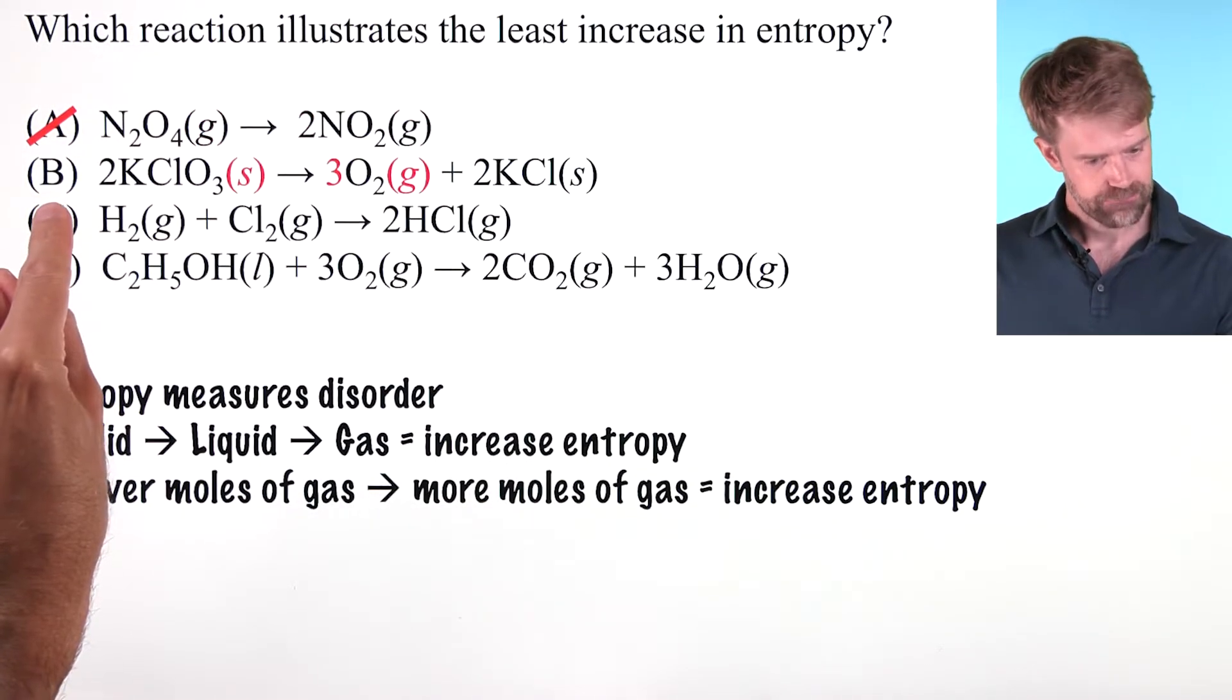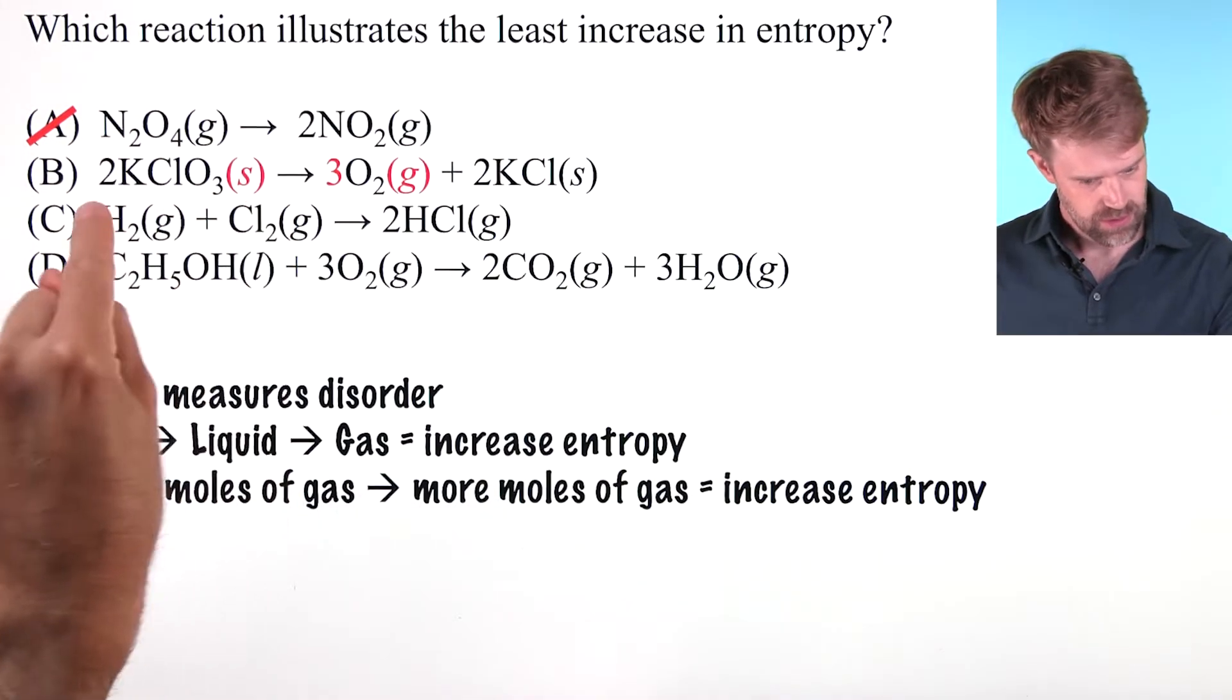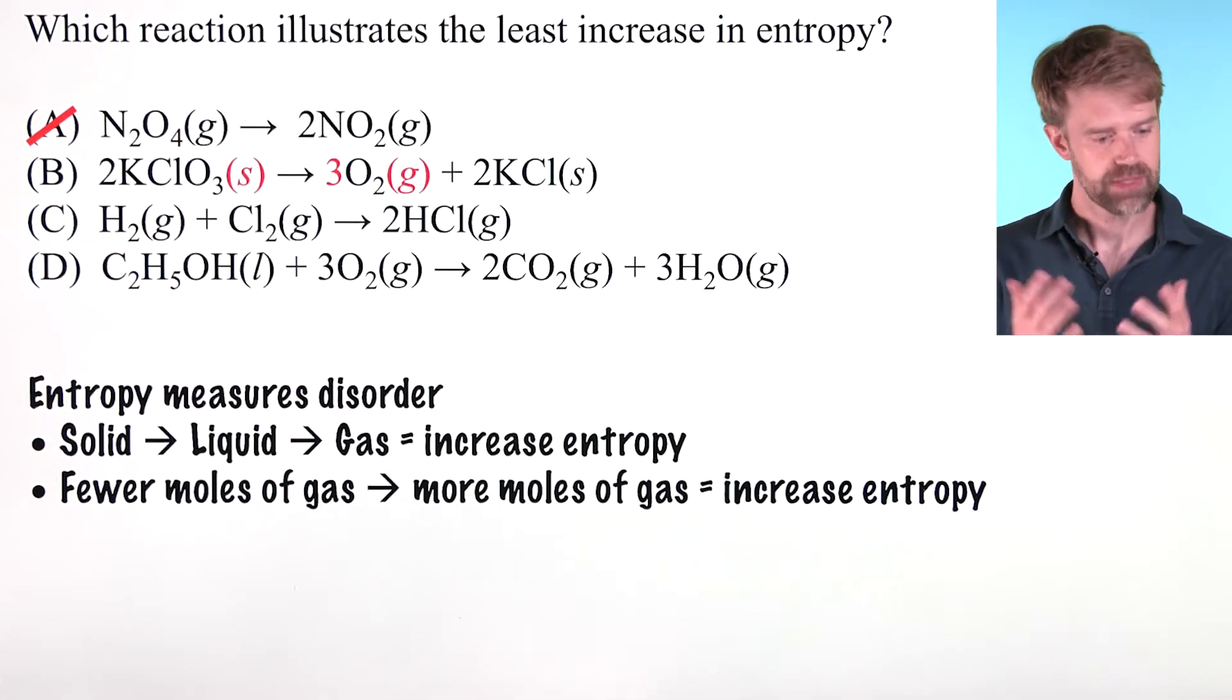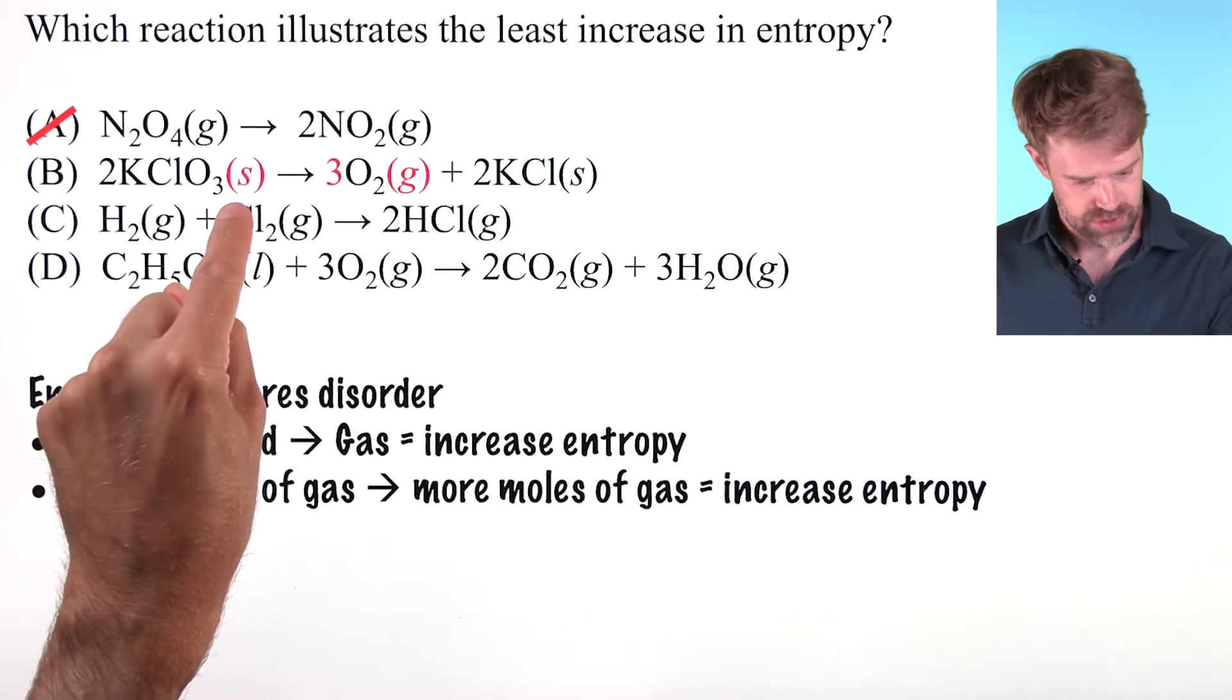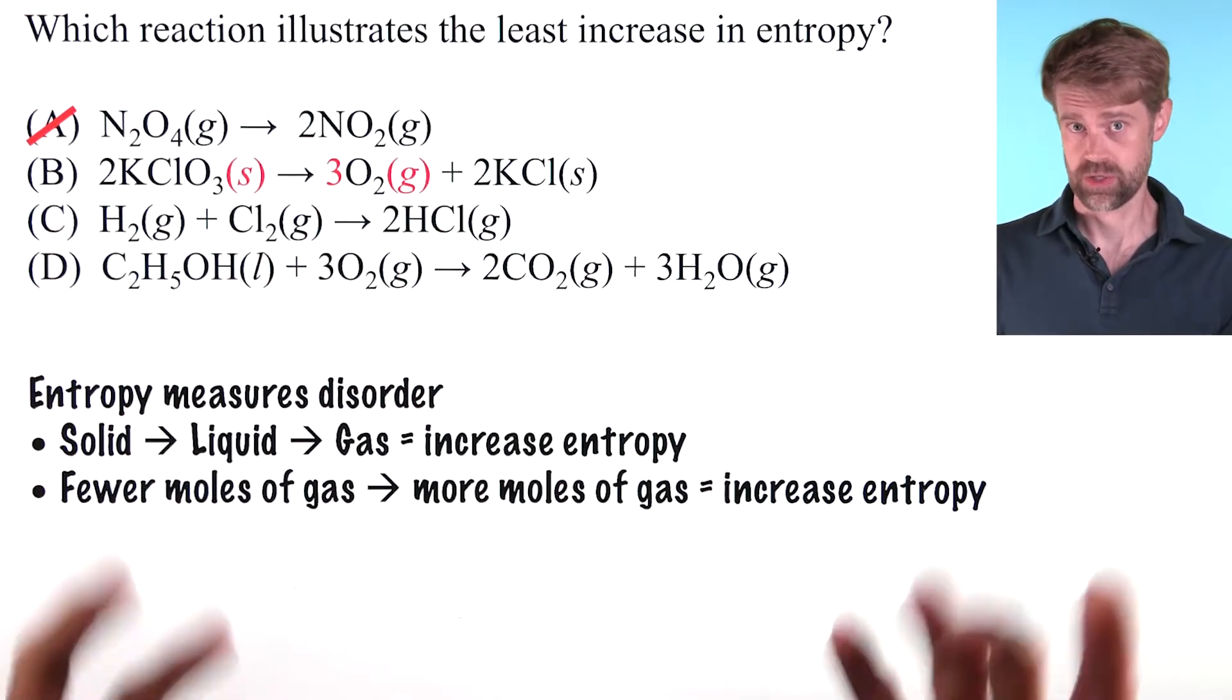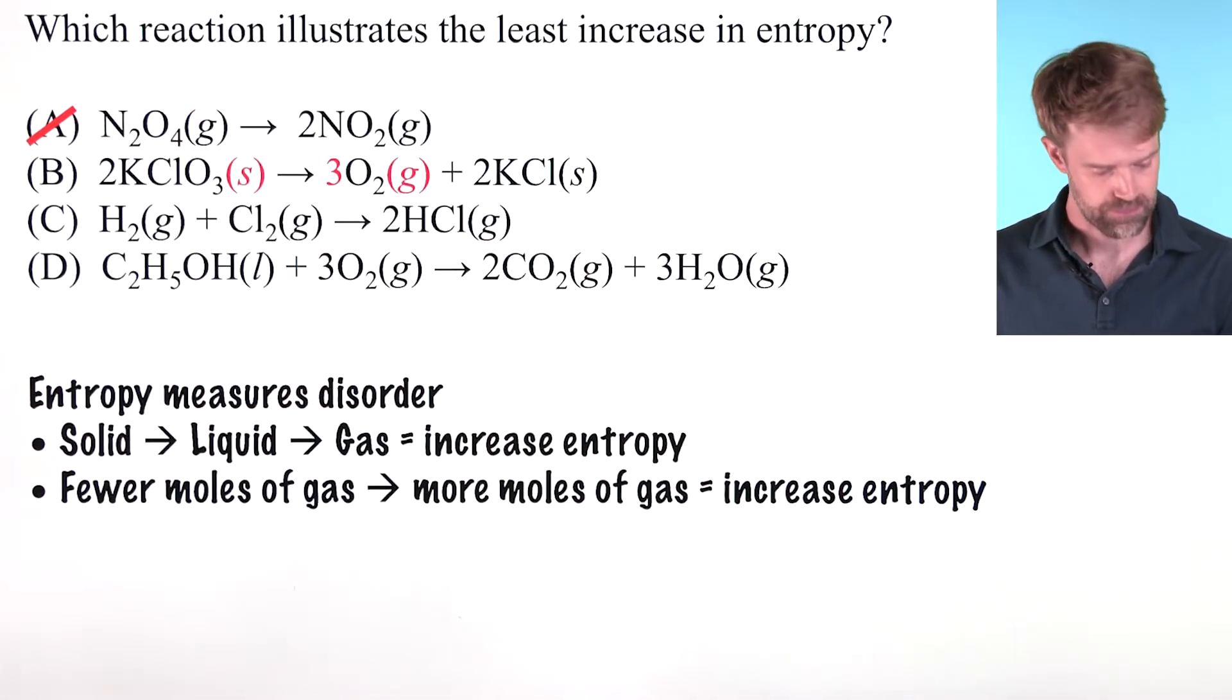In choice B, we have two moles of a solid producing three moles of gas and two moles of a solid. Here we see both of these two trends in action: moving from solid to gas and producing more moles of gas. Of course, we didn't even have any gas at all but creating gas, right?